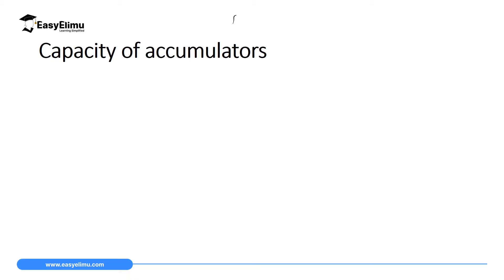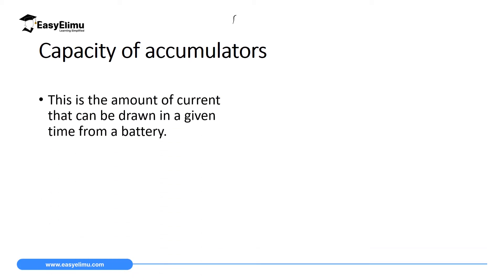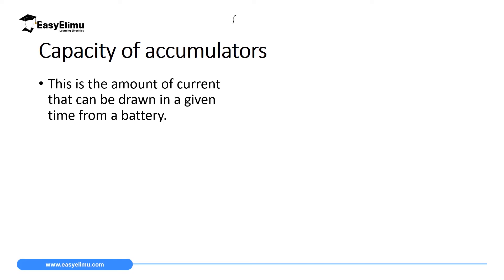When we talk about the capacity of an accumulator or battery, we are talking about the amount of energy it can store, which equals the amount of energy it can supply — it cannot supply less or more than what it stores. We can also define capacity as the amount of current that can be drawn in a given time from a battery. Capacity is expressed in ampere-hour, where ampere is the SI unit of current and hour is the unit of time.